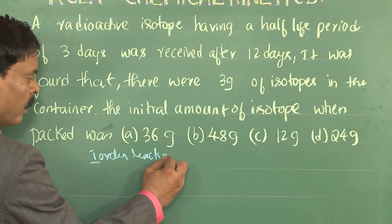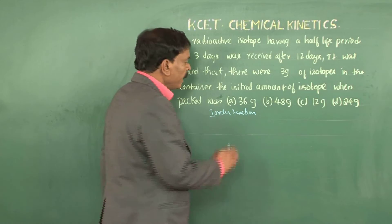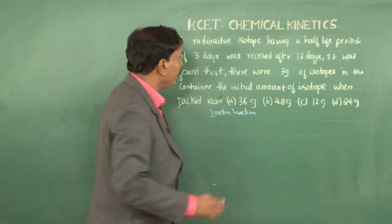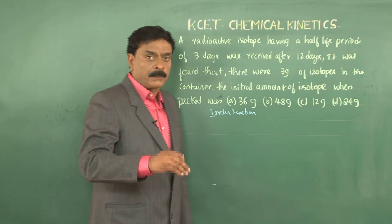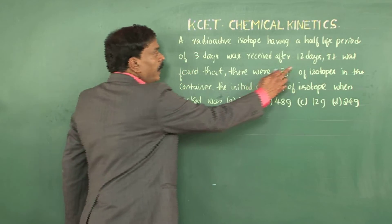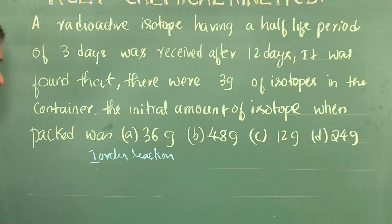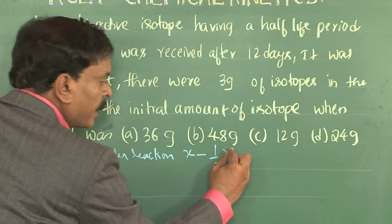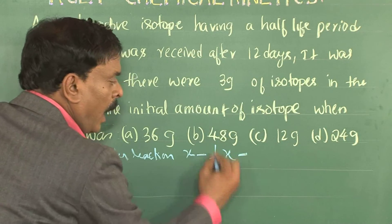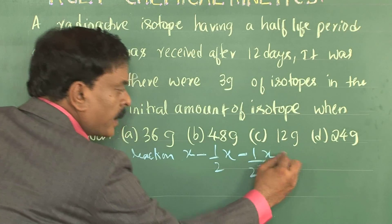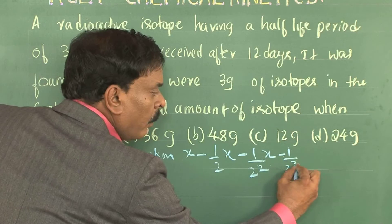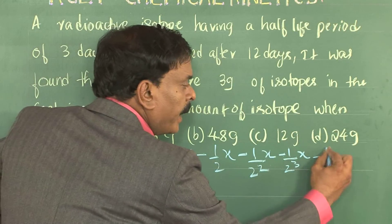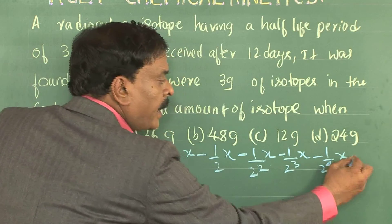Whatever expressions we have for a first order reaction hold good for radioactive disintegration. We need to find the initial amount. Supposing the initial amount is X, in the first half-life period it becomes X/2. In the next, it becomes X/4, or X / 2². After 3 half-life periods it is X / 2³, and after 4 half-life periods it is X / 2⁴, and so on.